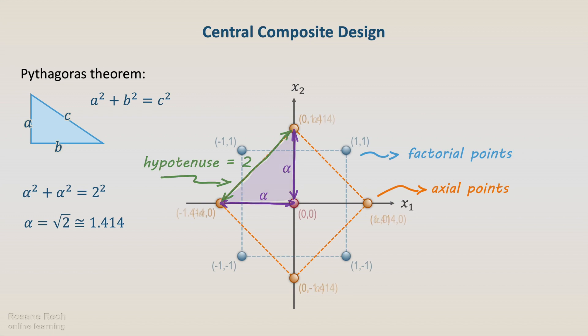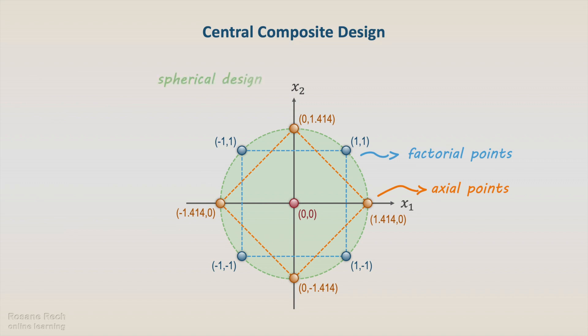This way, the four axial points are the combination of negative or positive 1.414 and 0. This particular design is a spherical design with all experimental points equidistant from the design center.